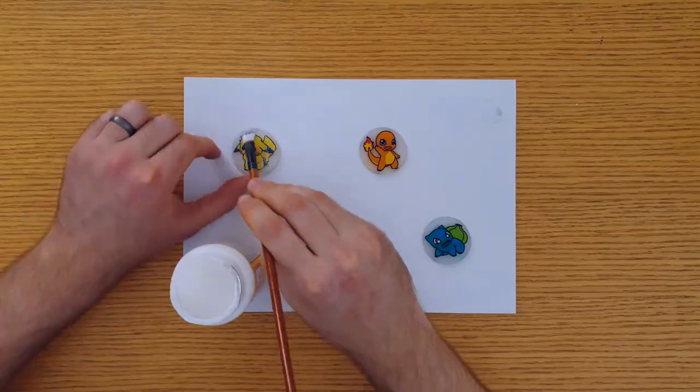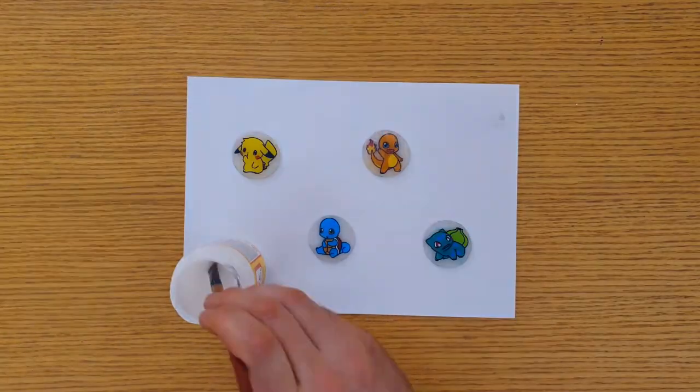To protect your drawings, you can add a layer of clear varnish. Something like Mod Podge works well. Don't worry, it dries clear.